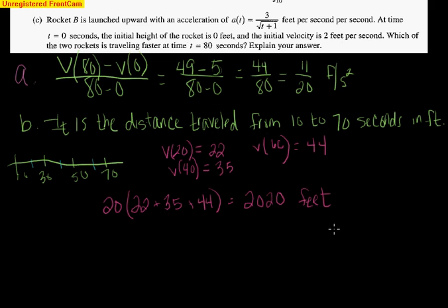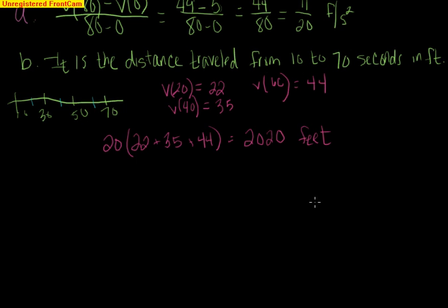The way the AP test graded this was you got one point for the explanation that it was the distance. You got one point for recognizing that you have to use V of 20, V of 40, and V of 60, because those are the midpoints. And you get one point for the actual value, 2,020. Now, what they don't give you a point here, again, is the units. Here's how they dealt with units. If you got the units right in part A, so you had units of feet per second squared, and you got the unit right in part B of feet, you give yourself another point. It's all or nothing, though. You can't have one unit right and one unit wrong get half points. There are no half points.